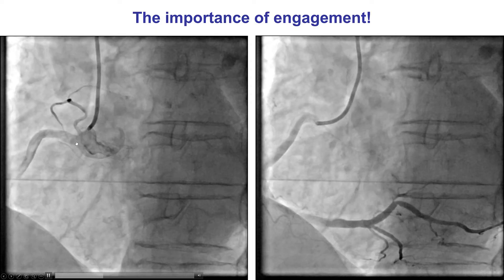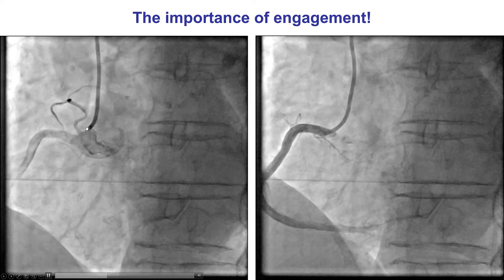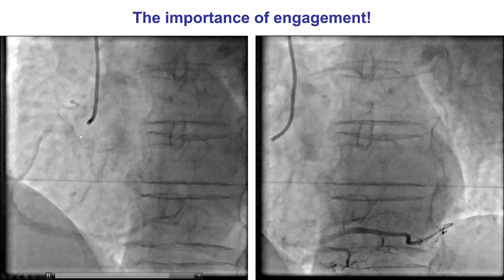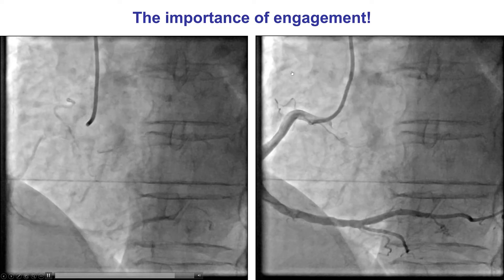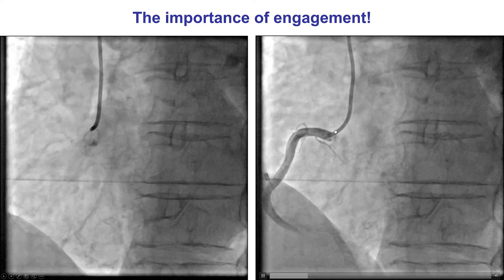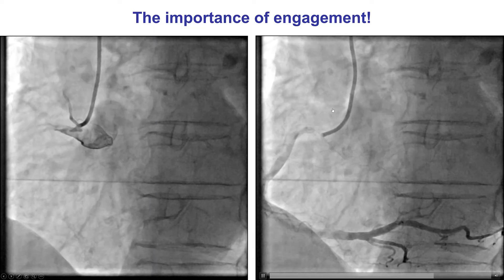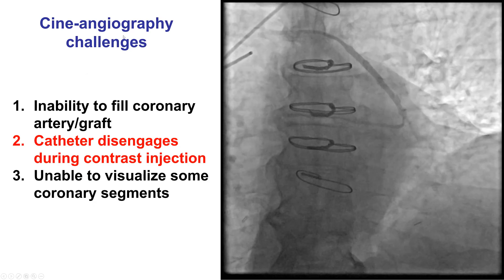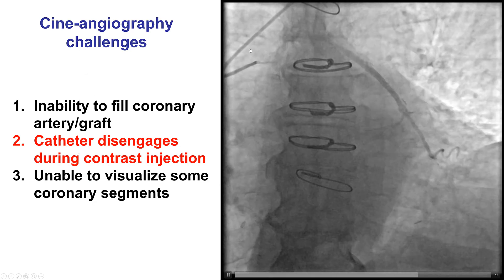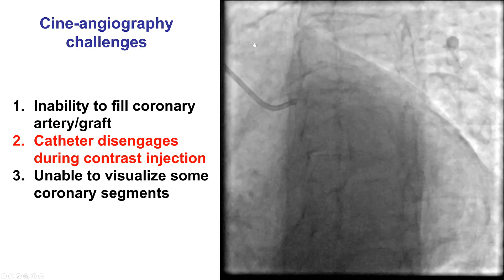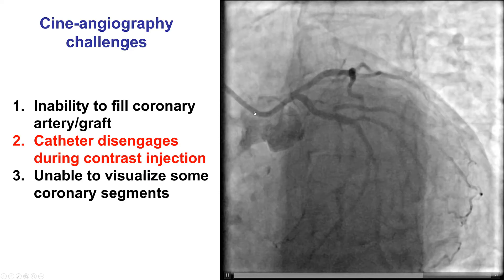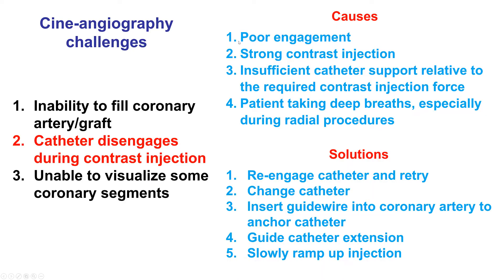This is an example of the importance of good engagement. On the left panel, the catheter is not properly engaged into the right coronary artery, so the angiogram is very suboptimal. On the right panel, the catheter is well engaged, and now we can well visualize the entire RCA as well as the ostium. A second challenge with cine angiography is disengagement of the catheter during the injection. There are many causes: poor engagement to start with, very strong contrast injection, insufficient catheter support, or the patient taking deep breaths. This is especially true for radial access.